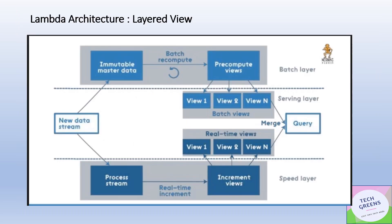Let's understand the layered view of the lambda architecture. We have three layers. First is the batch layer — whatever new data is coming into a system, it will go to the batch layer and at the same time to the speed layer as well. At the batch layer, we have the immutable master data — the archive or historical data kept here. Batch processing will happen here to compute and process the data and create pre-computed views which could be used by the serving layer to answer queries or present data.